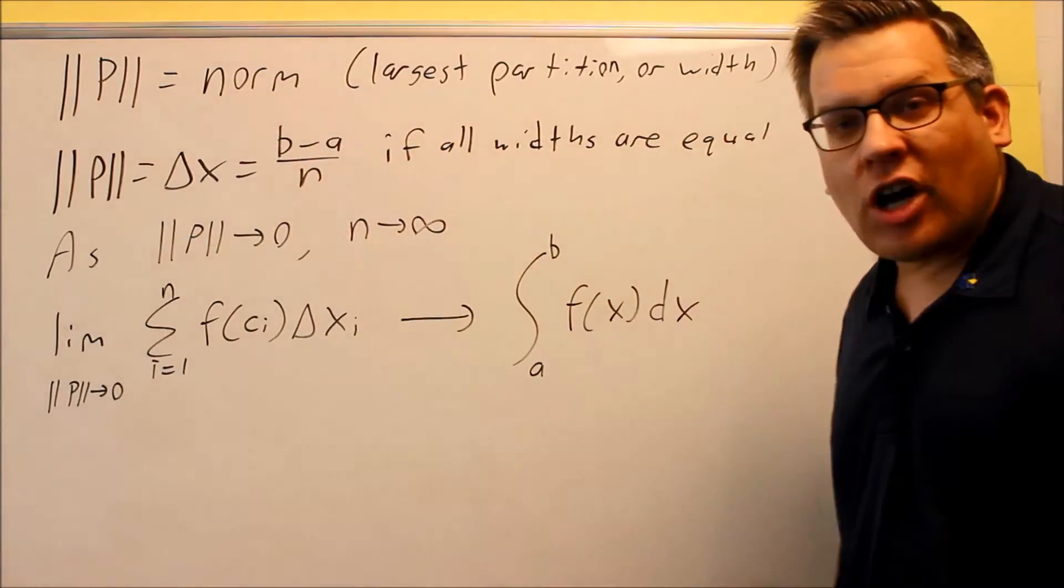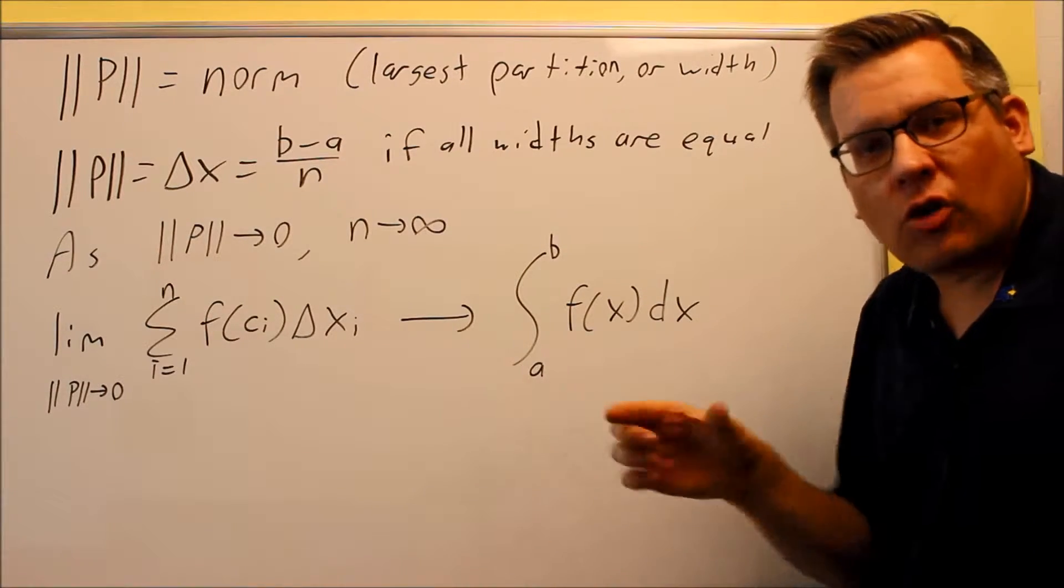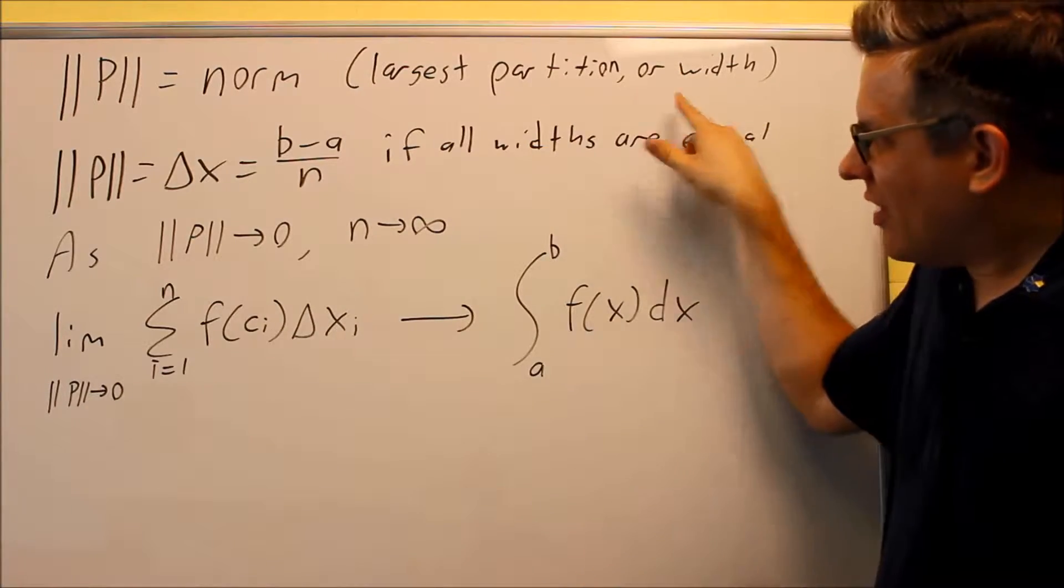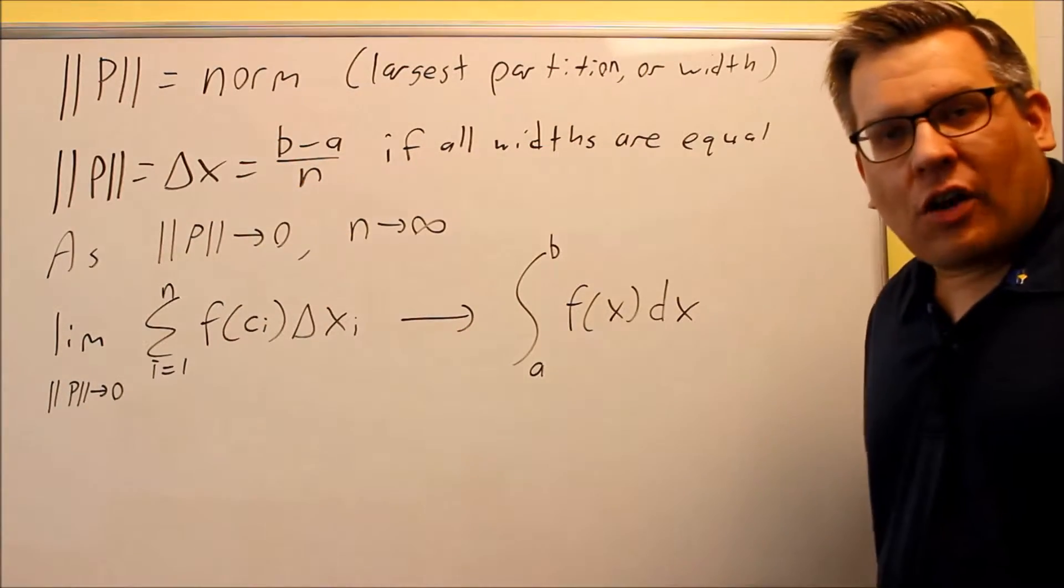that's why we have to define this norm by saying that if we have all these different varying widths, we want to look at the largest partition or the largest width. That's going to be called your norm.